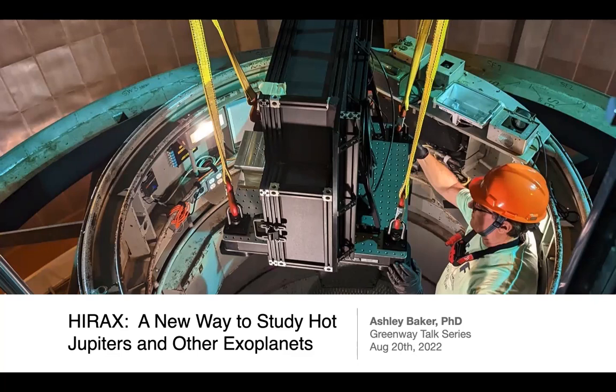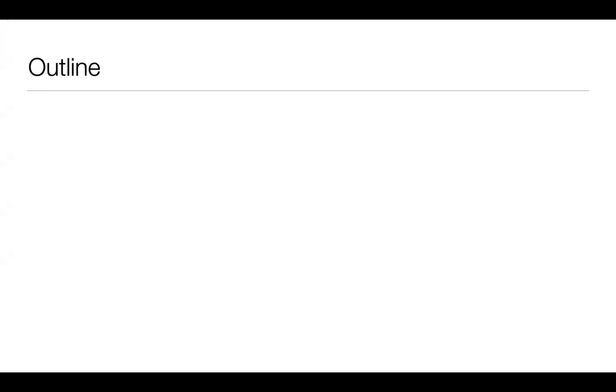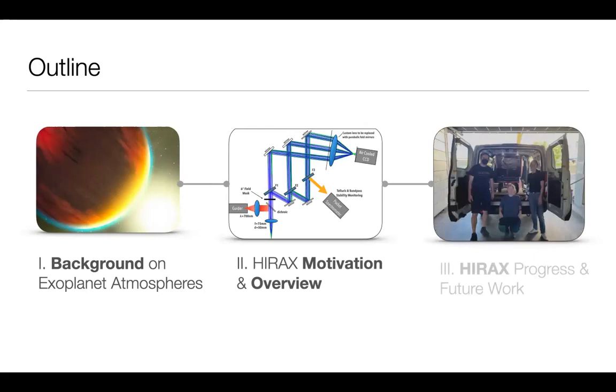Thanks for the introduction. It's really nice to be here to tell you about HYRAX. You can see the instrument here in this picture being guided into the prime focus cage of the Hale telescope at Palomar by Kirk there on the right. This instrument is exploring a new way to study hot Jupiter atmospheres and exoplanet atmospheres in general. But before I go into the instrument, I would like to talk about some of the background on exoplanet atmospheres. And then I'll talk about some of the motivation for this instrument and give you an overview. And then finally, I'll talk about the progress and future work to be done for the project.